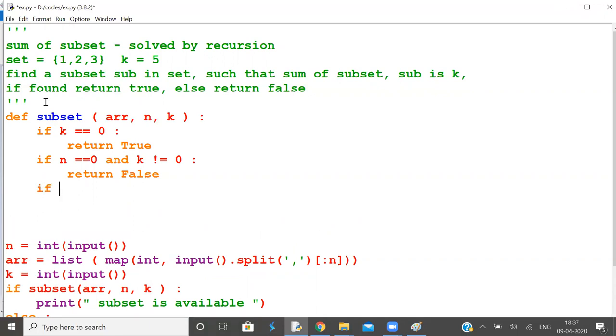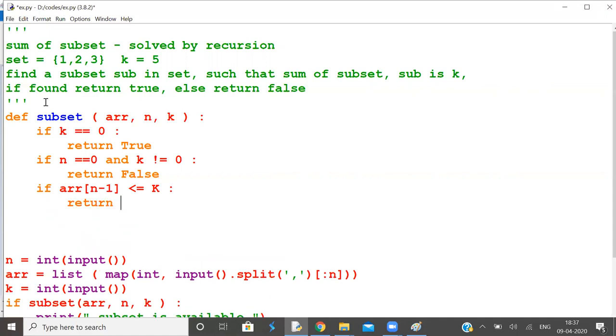If the last element of the array is less than or equal to k, then we have two options: consider or don't consider. First one, consider: subset with array, how many elements are left? n minus 1. So what is k now? If you consider, k minus arr[n-1] is the remaining k. Or don't consider - so k will not change.